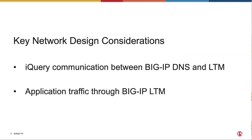Based on this workflow, there are key network design considerations when we integrate F5 Big-IP DNS and LTM in a Cisco ACI multi-site or multi-pod environment. One is the communication between Big-IP DNS and LTM, which is via iQuery — an F5 proprietary protocol. It is important to establish this communication for information exchange, so that Big-IP DNS can always respond with the best available VIP across data centers from a DNS request.